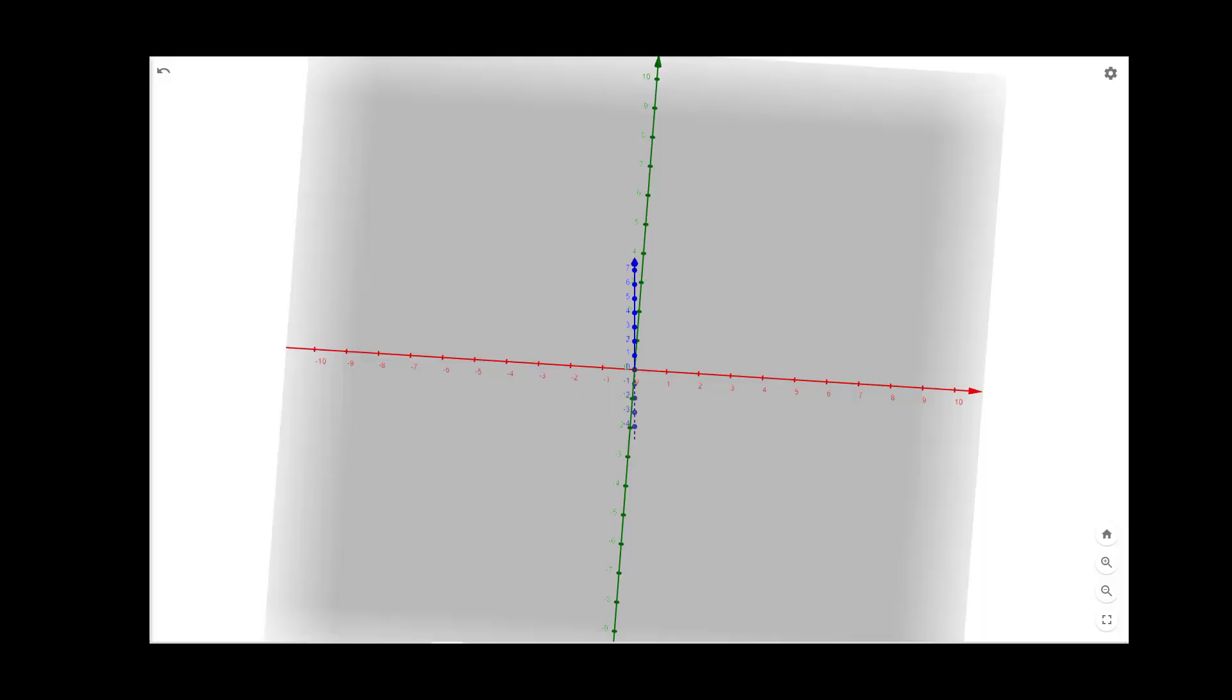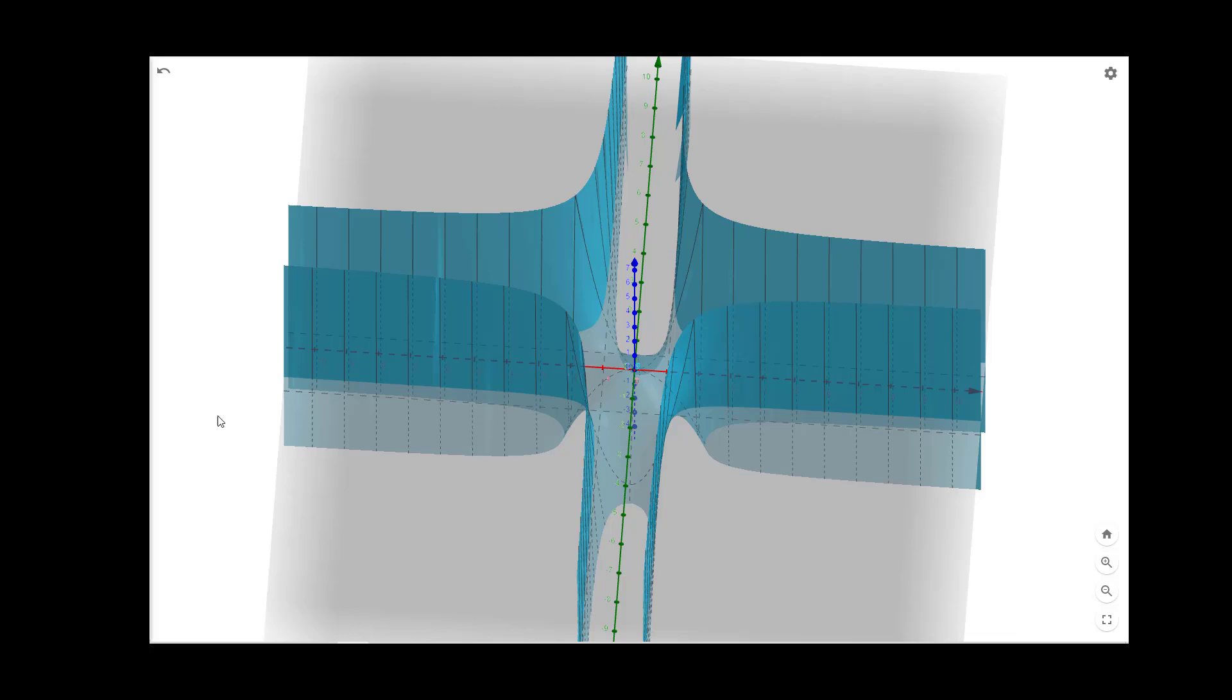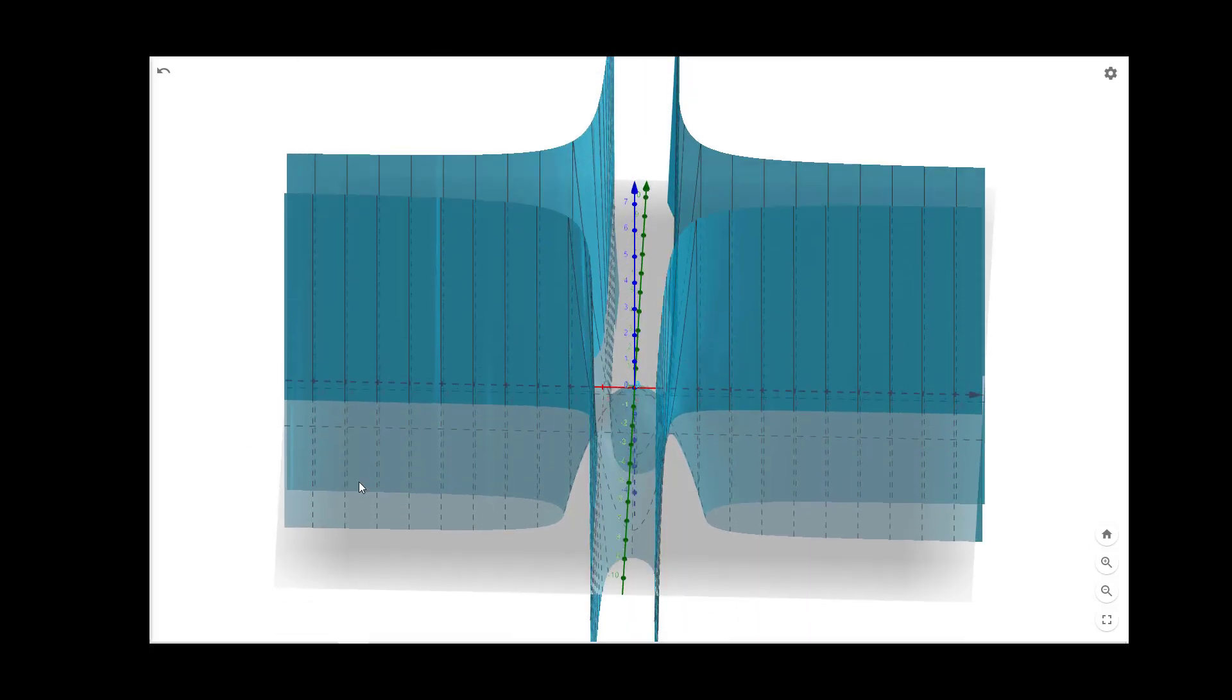Now, let us visualize the graph of the function x square y square minus x square minus y square. This is the graph of the function, you can clearly see.